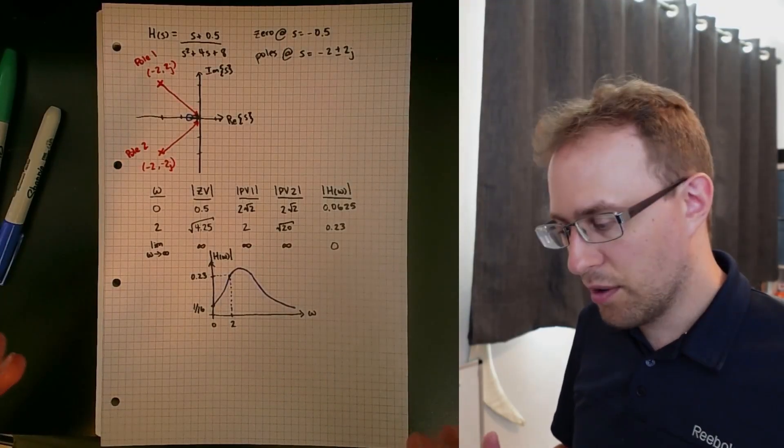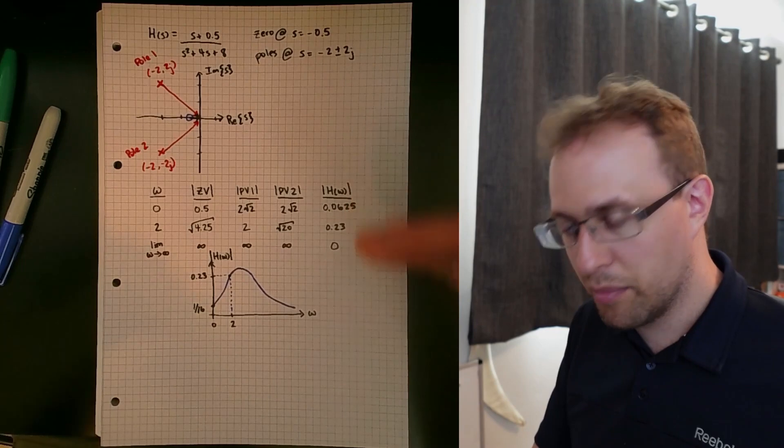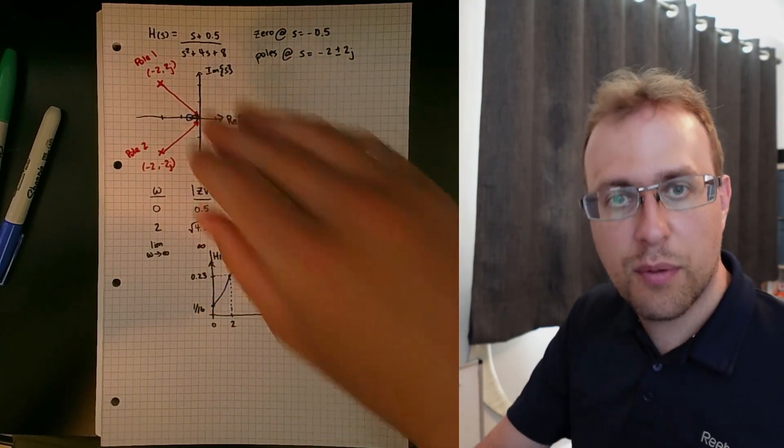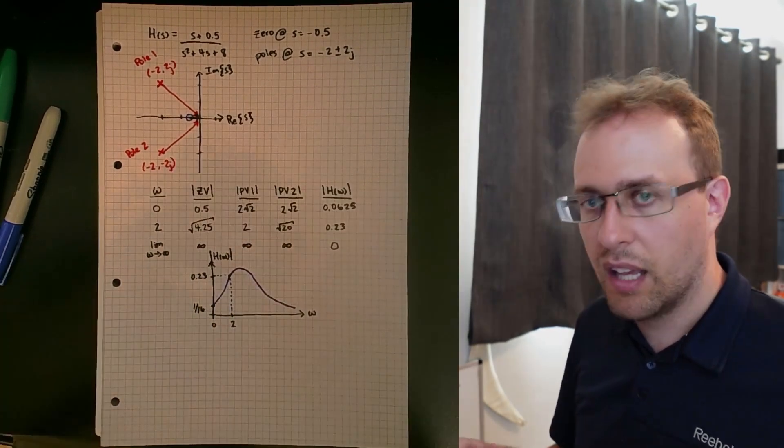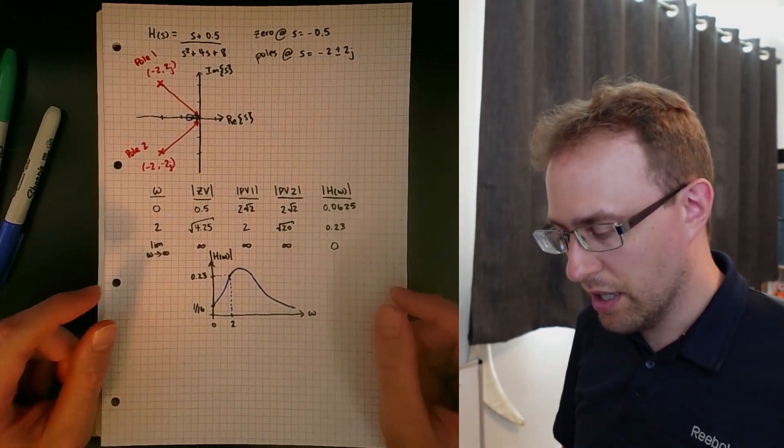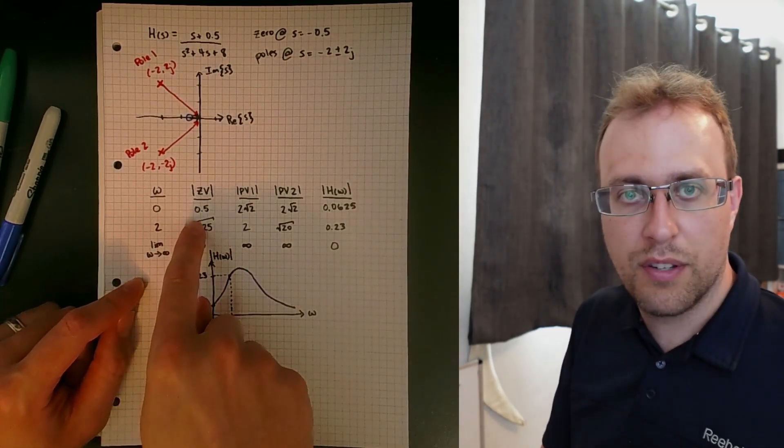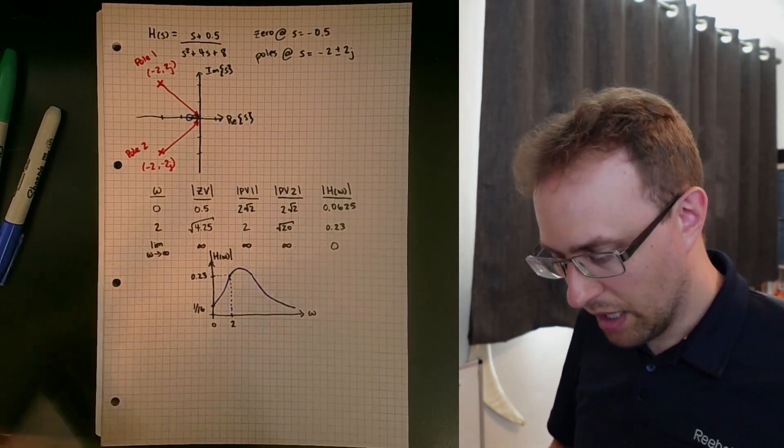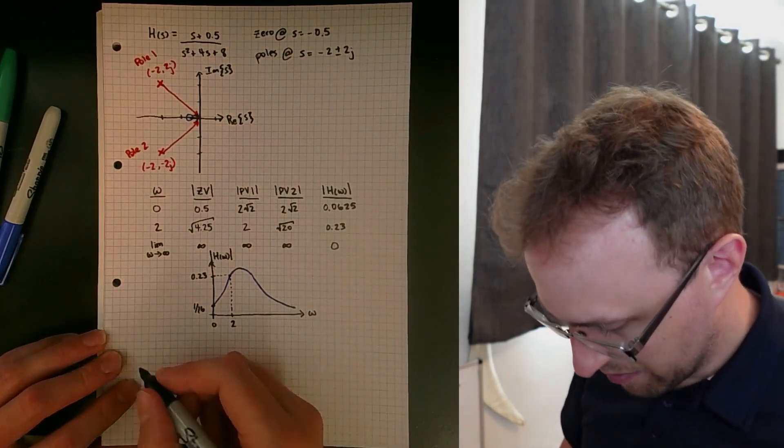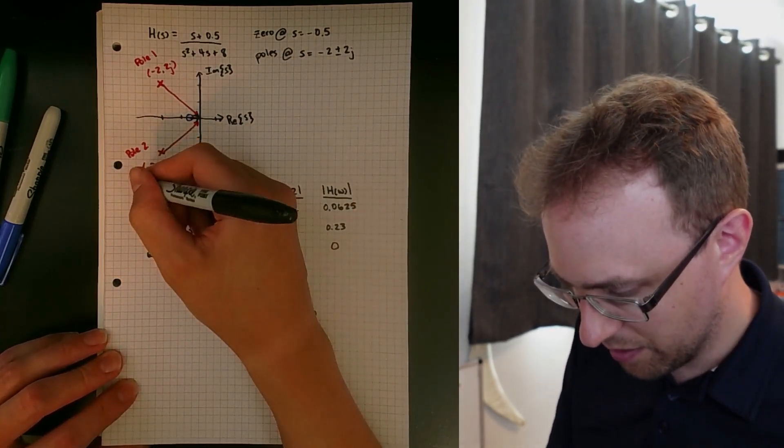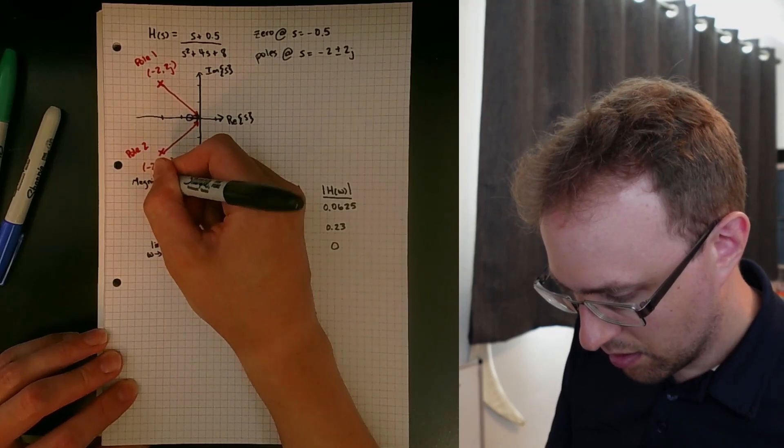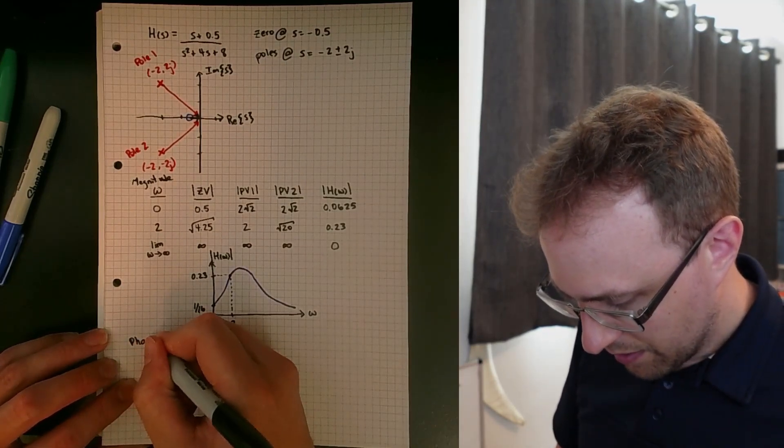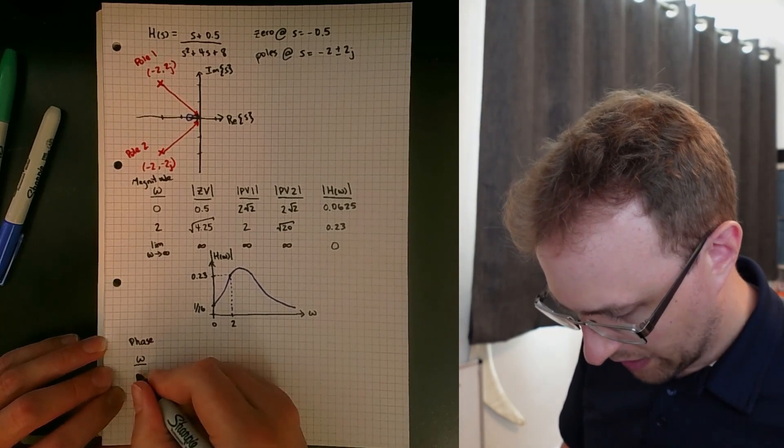Now we're ready to do the phase. We use a similar setup. We pick a couple of test frequencies. Again, I'm just going to pick three test frequencies. We find the phases associated with the vectors at those frequencies. Then we use the properties for the phase of the frequency response, where essentially we take the phases associated with the zeros, add them all together, and then subtract the phases associated with the poles. I'm going to make a very similar table to the one we did for the magnitude. I should actually label this up here and say we did magnitude.